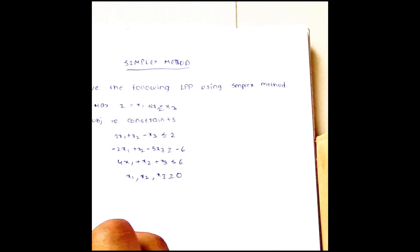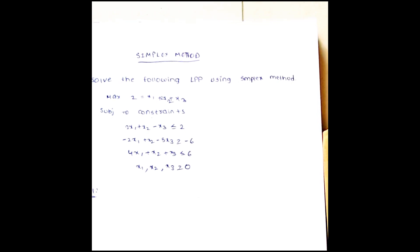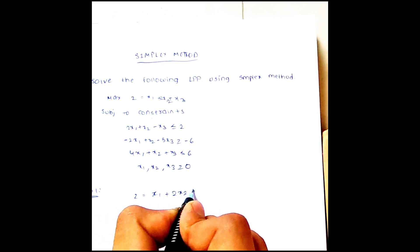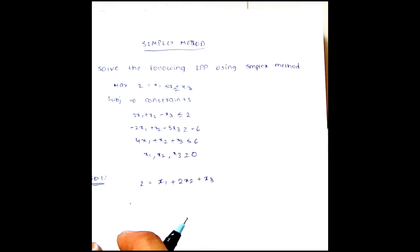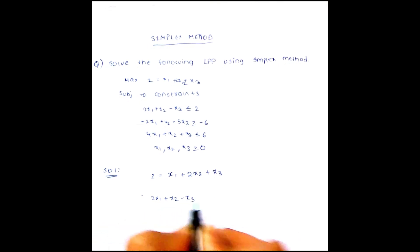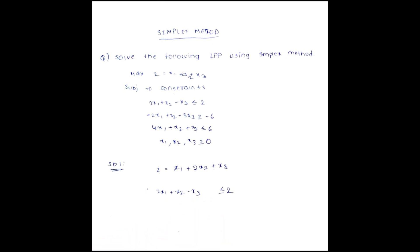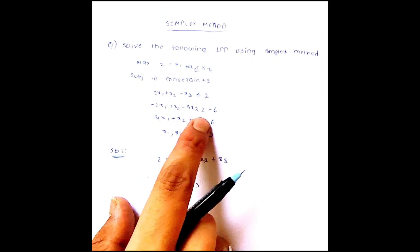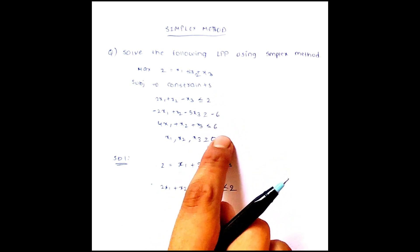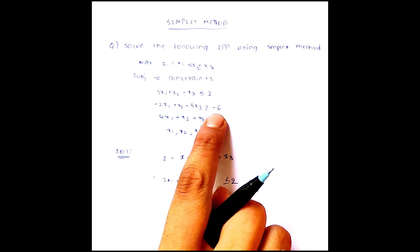So this is the question. Let us solve this problem in an easy way. Let us write the equations again. z equal to x1 plus 2x2 plus x3. Remember one thing: the right-hand side value should always be positive — it should not be negative. Here it is negative.